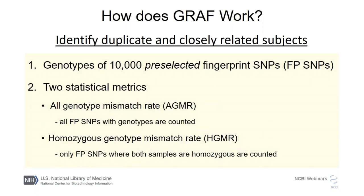Those fingerprint SNPs are very carefully selected — they represent many of the common genotyping platforms, were selected to be biallelic with relatively high minor allele frequencies, and were selected to avoid linkage disequilibrium as much as possible — in other words, they're well separated. They cover all 22 autosomes, and there's no strand information needed: no AT or GC pairs, so you don't have to worry about strandedness in your data.